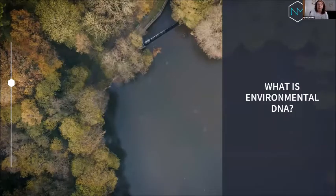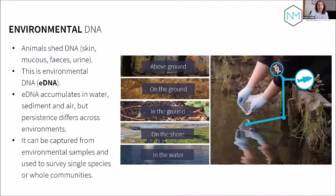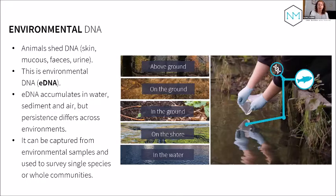So what is eDNA? Simply put, it's DNA left behind in the environment by animals through excretions and secretions such as shed skin cells, mucus, faeces, urine, gametes, blood, and decomposing remains. eDNA accumulates in water, sediment, and air, though the length of time it persists varies. We sample it from the environment, extract it from the capture medium, then amplify it using PCR to make millions of copies. eDNA analysis can target single species or multiple species across taxonomic groups.